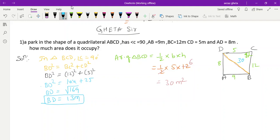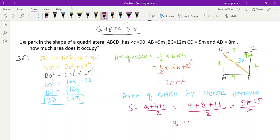We will find area of ABD by Heron's formula. For that we will find the semi-perimeter. S = (A + B + C)/2 = (9 + 8 + 13)/2 = 30/2 = 15. Semi-perimeter is equal to 15.